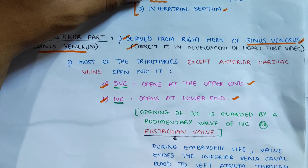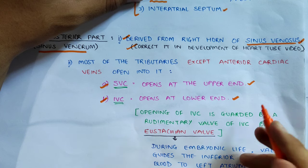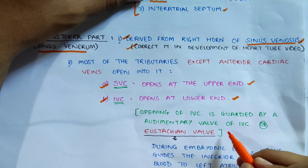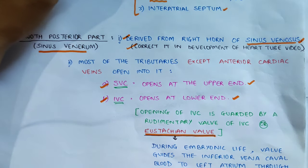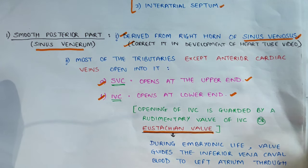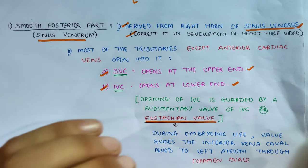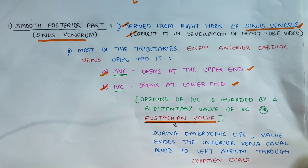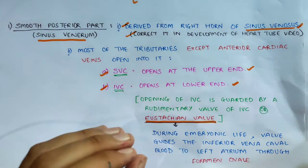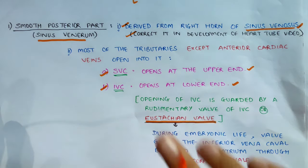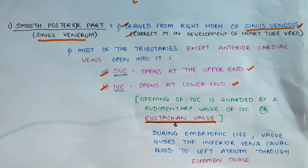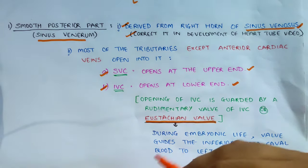The opening of the inferior vena cava is guarded by a rudimentary valve called the valve of the inferior vena cava, which we call the Eustachian valve. This valve guards against the backflow of blood.